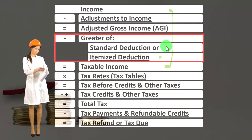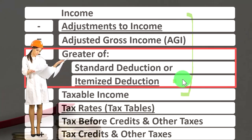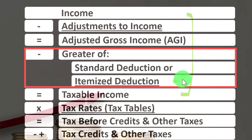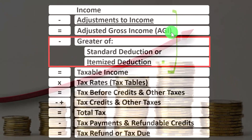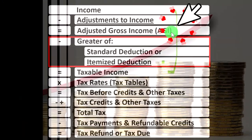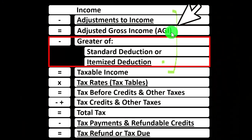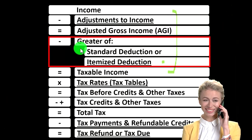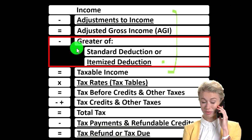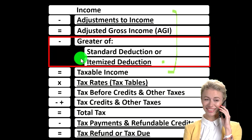The below-the-line deductions — whether that be standard or itemized — are not going to have an impact on the phase-outs, because we don't generally calculate the phase-outs on taxable income, but rather on the adjusted gross income. So that's another useful component to keep in mind. Now we're down here and we take the greater of the standard or itemized deductions.